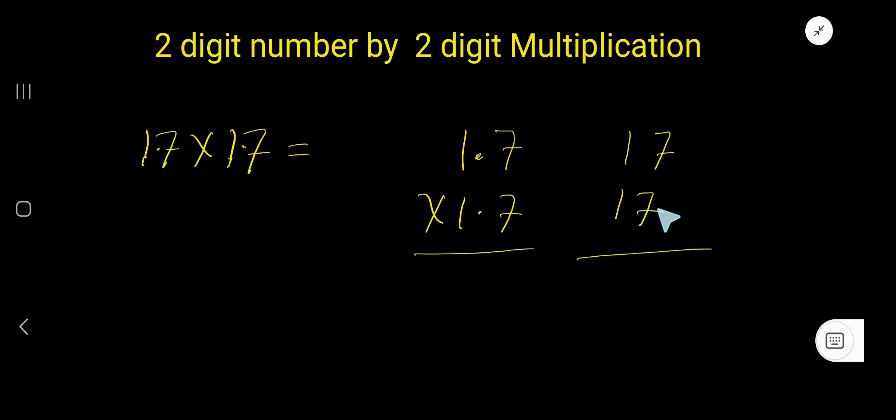Start with the 7. 7 times 7 is 49 - write 9 here and carry 4 to the next column. 7 times 1 is 7, plus the carry 4 equals 11.